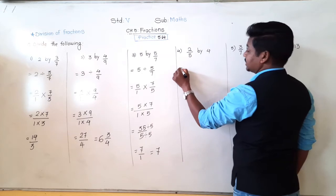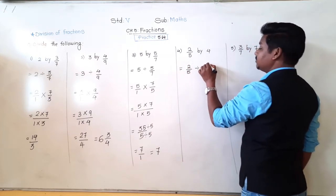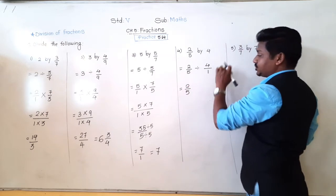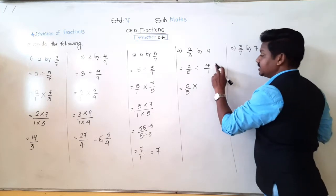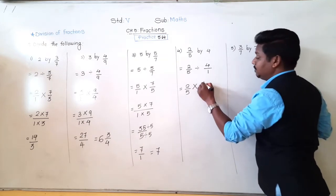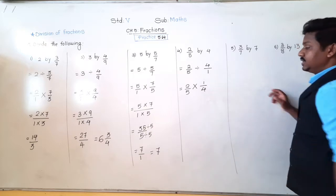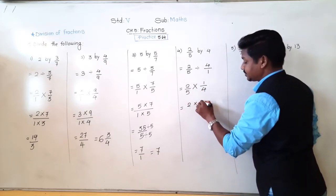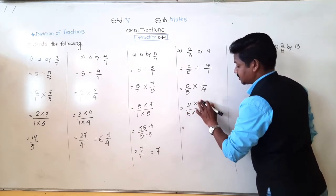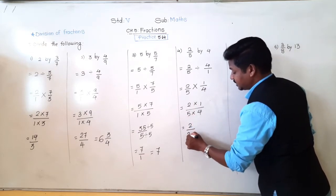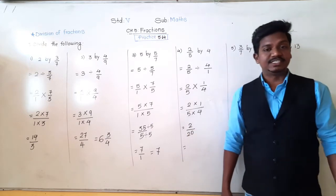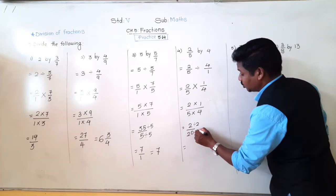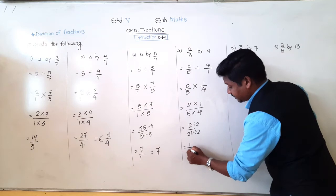Next: 2 upon 5 divided by 4. That means 2/5 divided by 4, and 4 is a whole number but it has denominator 1. Now 2 upon 5 — instead of division, write multiplication. When you write multiplication, the next fraction is written in reciprocal form: it was 4 upon 1, so it becomes 1 upon 4. Now multiply numerator with numerator and denominator with denominator: 2 × 1 = 2, 5 × 4 = 20. Are 2 and 20 in the same table? Yes, table of 2. So 2 ÷ 2 = 1 and 20 ÷ 2 = 10, giving 1 upon 10.